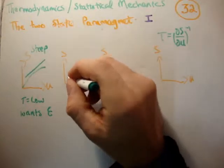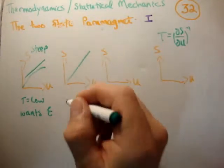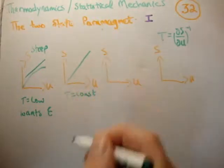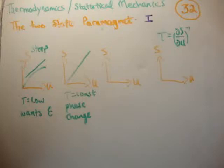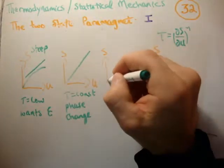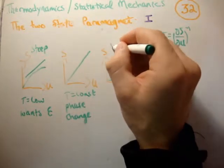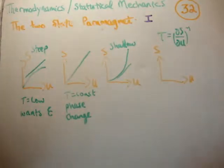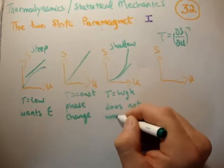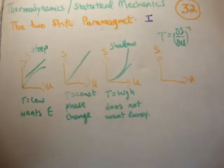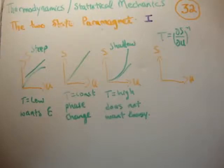Next, consider a system where the entropy versus energy graph is constant — this corresponds to a phase change where T is constant as energy increases. After that, we have a graph with a shallow slope, meaning the temperature is high. In this case the system does not want energy; its temperature is actually decreasing as you add energy.